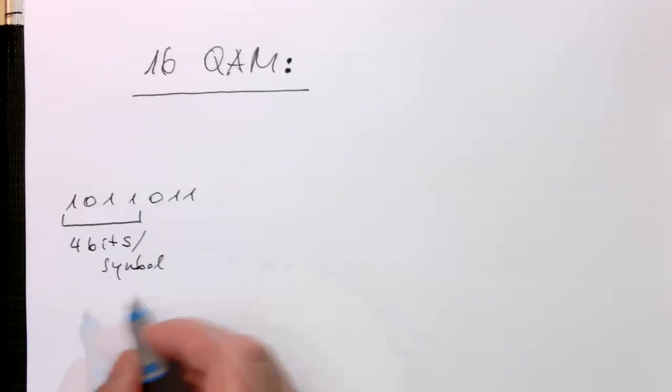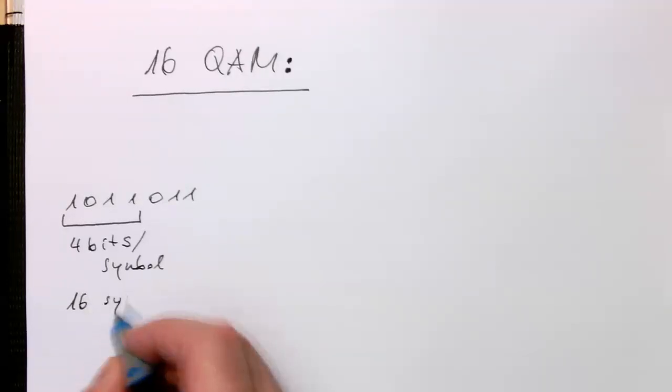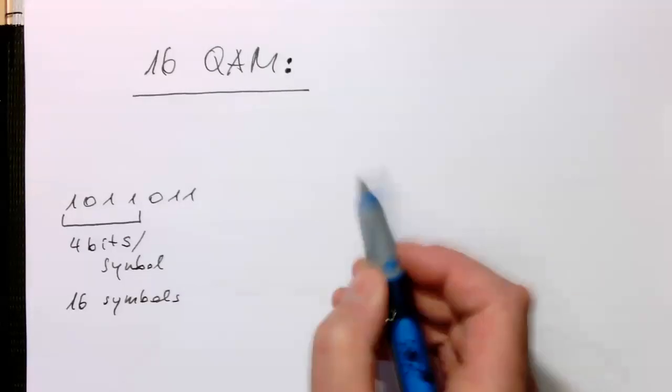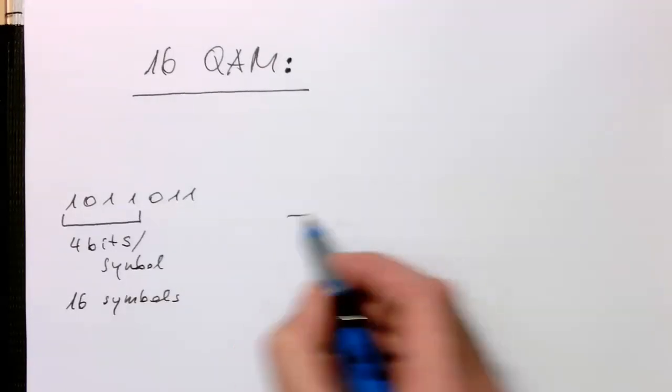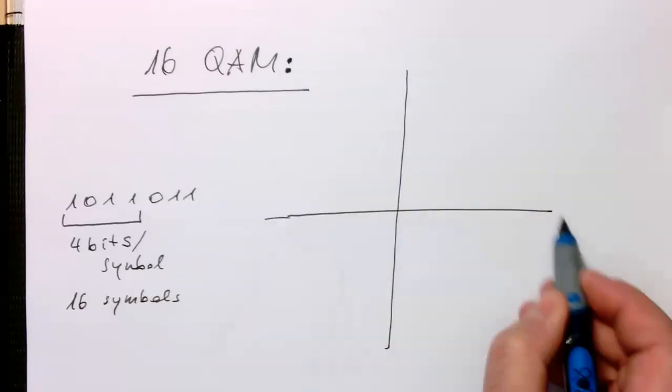So this means we have 16 different symbols. So let's see how we can squeeze these 16 symbols in our complex coordinate system.